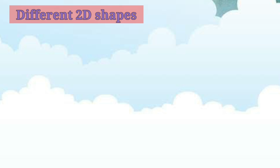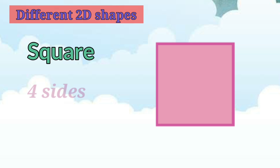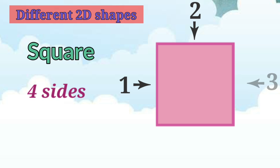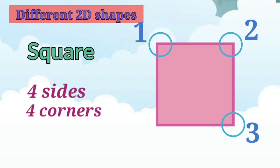Now let's learn about different 2D shapes. Children, what shape is this? It is a square. A square has 4 sides — 1, 2, 3, 4 — and it has 4 corners — 1, 2, 3, 4. In a square, all 4 sides are equal.